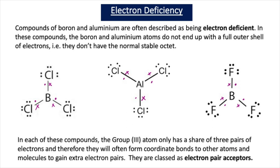The same is true of AlCl3, which is also classed as electron-deficient because there are only three pairs of electrons surrounding the aluminium and it doesn't have its stable octet. BF3 is also an electron-deficient species. In each of these compounds, the group 3 atom only has a share of three pairs of electrons and will therefore be able to form a dative or coordinate bond to other atoms and molecules to gain extra electron pairs, and are classed as electron pair acceptors.